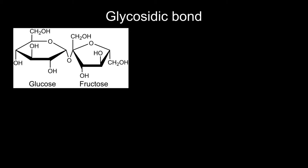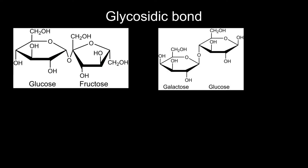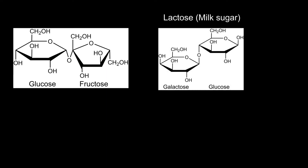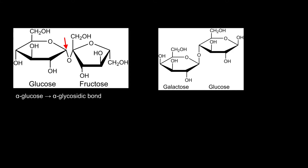The connection between the two monosaccharides is called a glycosidic bond. It is differentiated by the position of the hydroxyl group at the anomeric carbon atom which contributes to the bond, and is called an alpha or beta glycosidic bond.